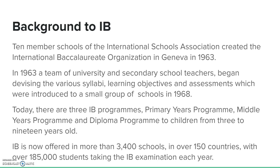Since then the IB has become immensely popular. There are three programs: the PYP, the primary years program for students in primary school; the middle years program for middle school and lower secondary; and then the diploma program for high school. It now covers children from three years old up to 19, and is offered in more than 3,400 schools, over 150 countries, with almost 200,000 students taking IB exams each year.